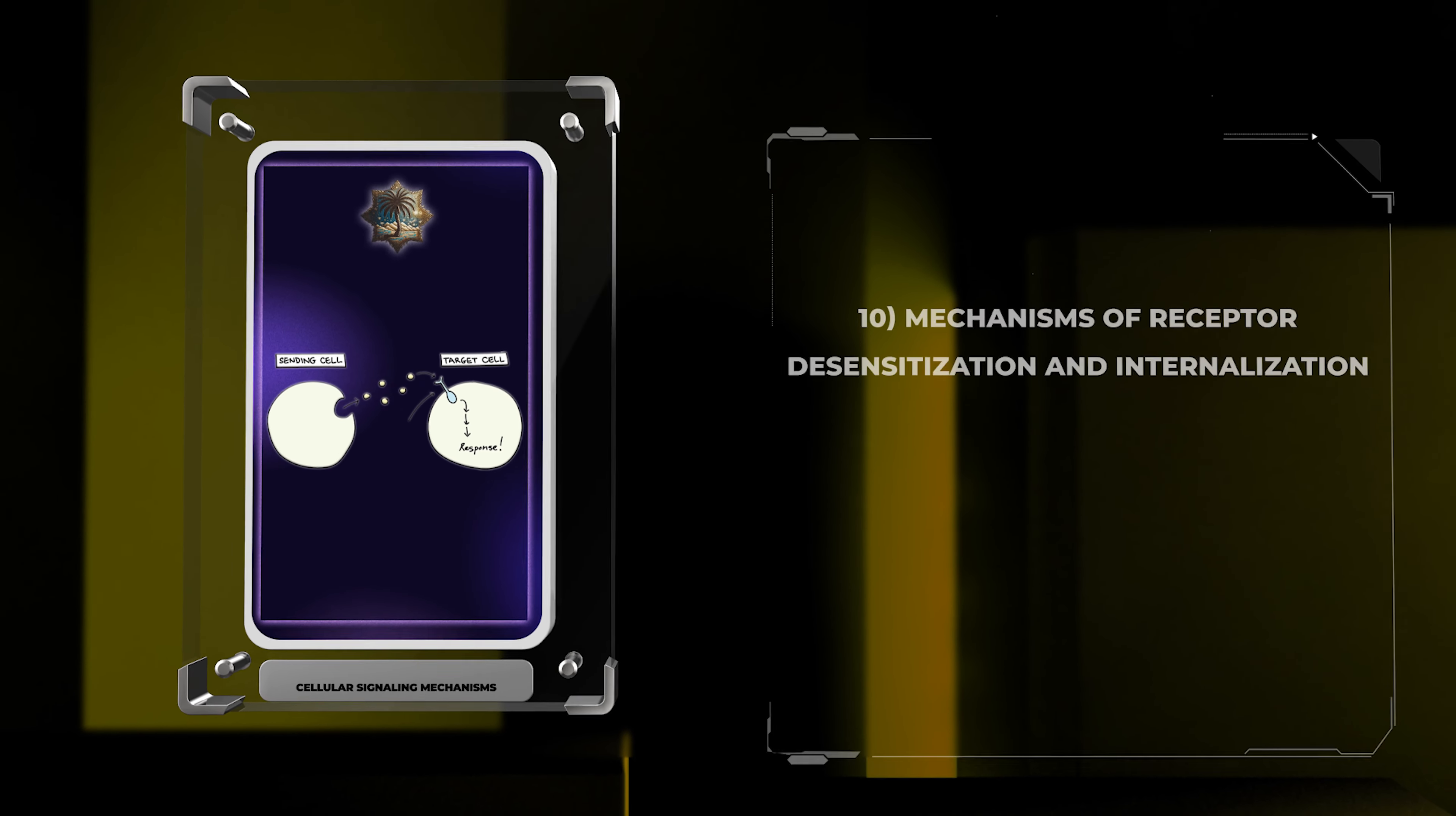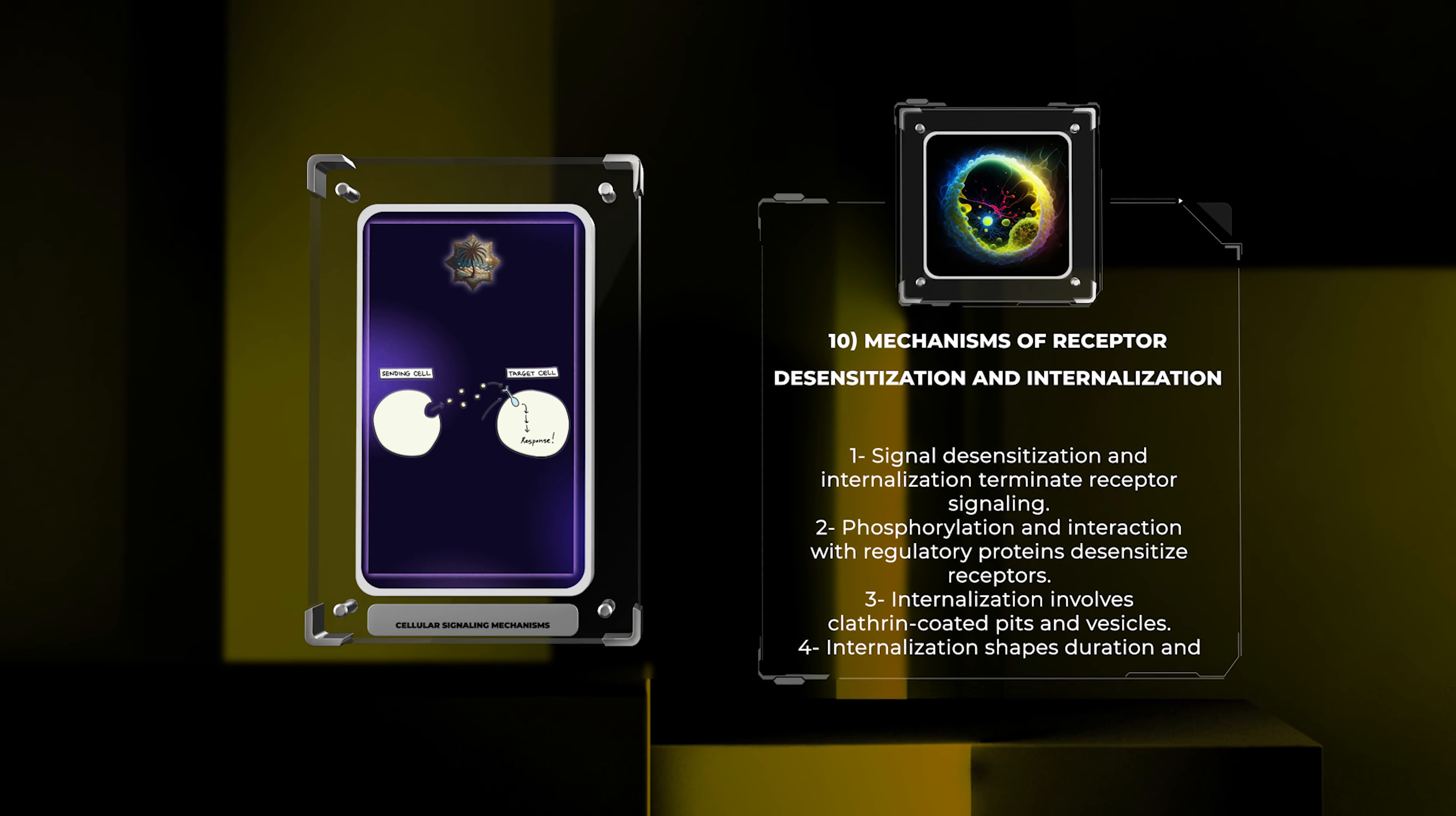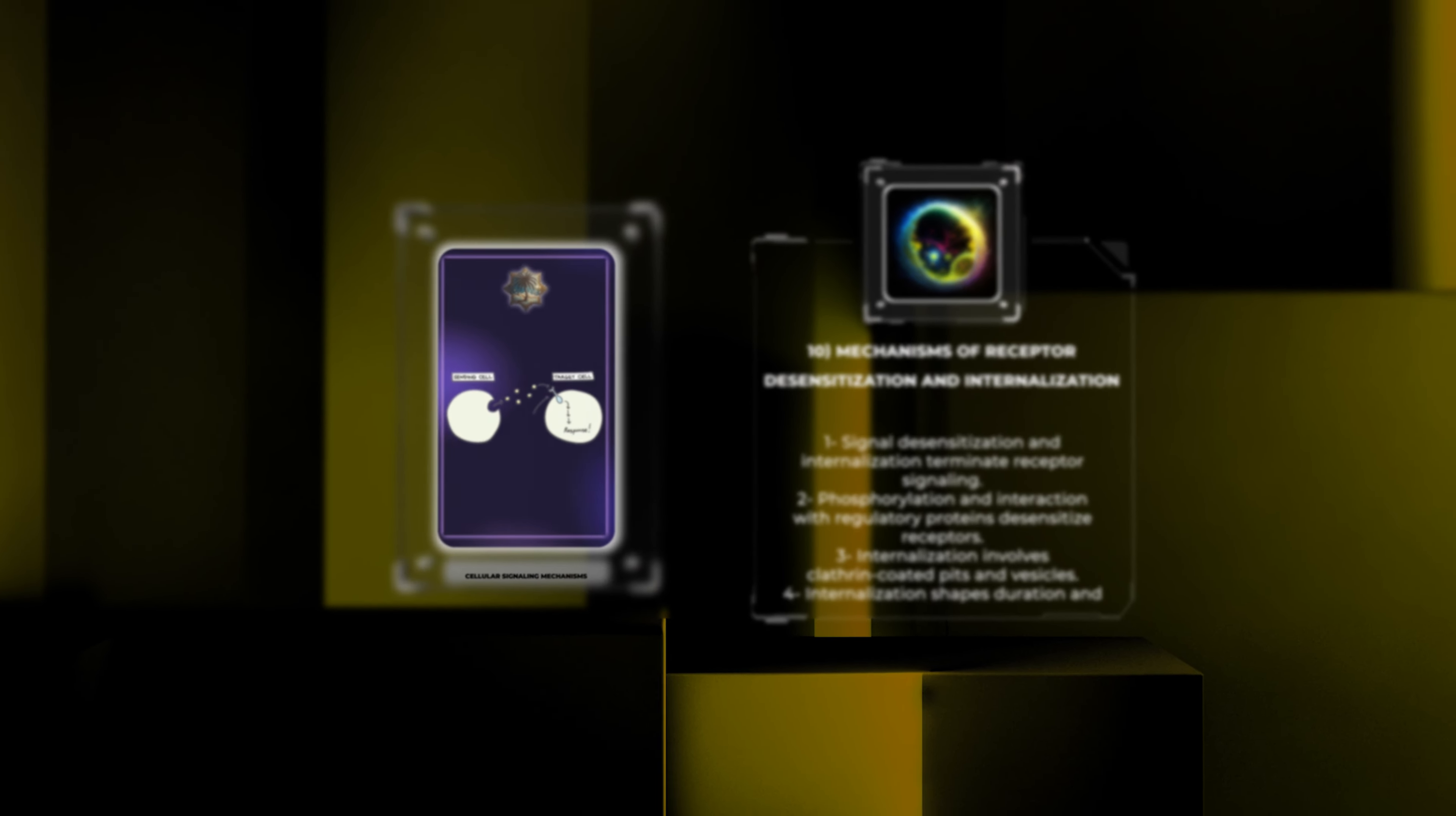Signal desensitization and internalization are crucial mechanisms to terminate receptor signaling and prevent prolonged activation. Receptors can undergo phosphorylation by kinases or interact with regulatory proteins, leading to their desensitization. Internalization involves clathrin-coated pits and vesicles that internalize the receptor-ligand complex into the cell. This process plays a vital role in shaping the duration and specificity of cellular responses.